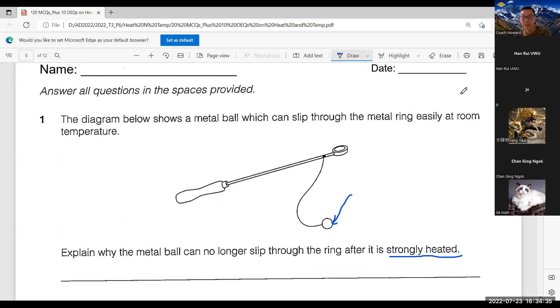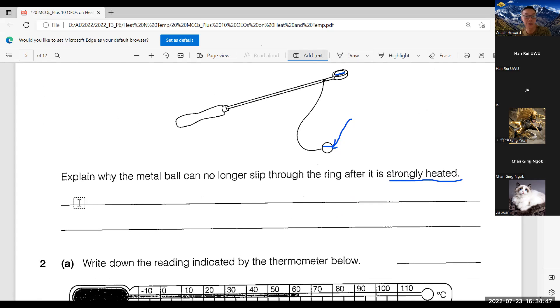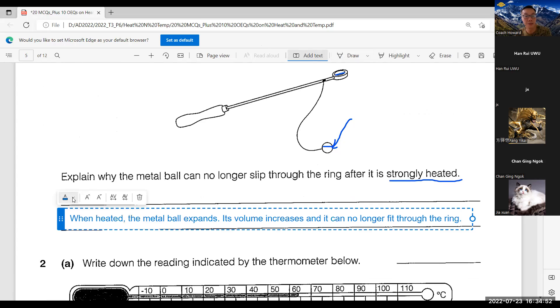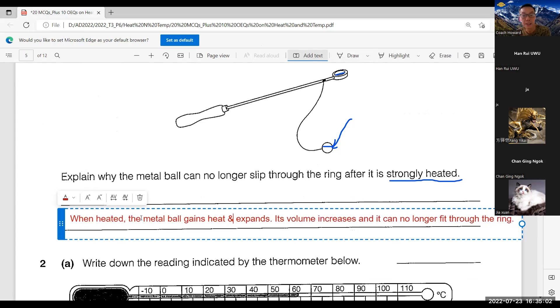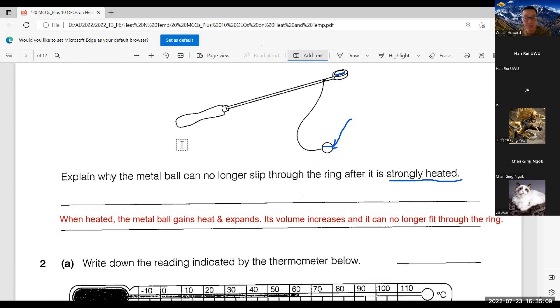They explain why the metal ball can no longer slip through the ring after it is strongly heated. Because as it expands, the diameter will exceed the diameter of this ring. Therefore, you're unable to go through. For this answer, you should write: When heated, the metal ball gains heat and expand.